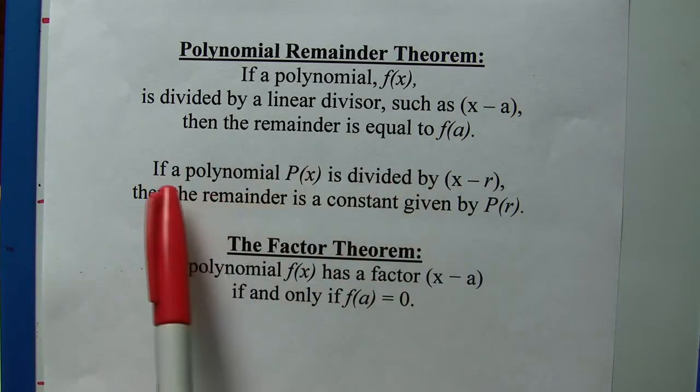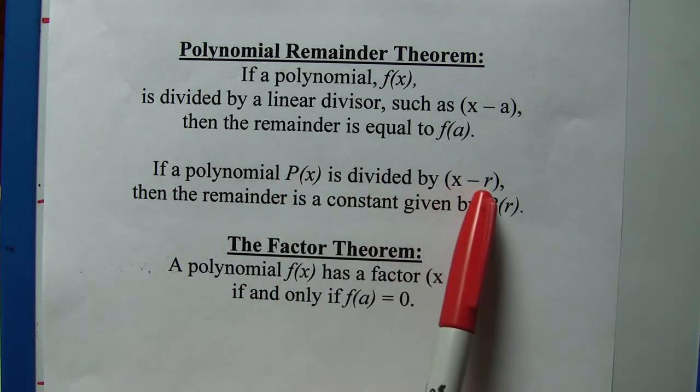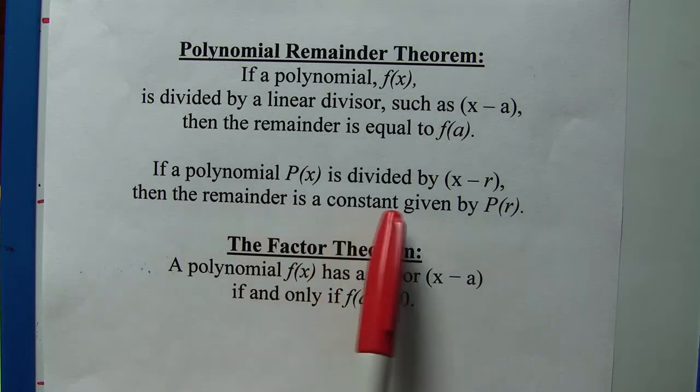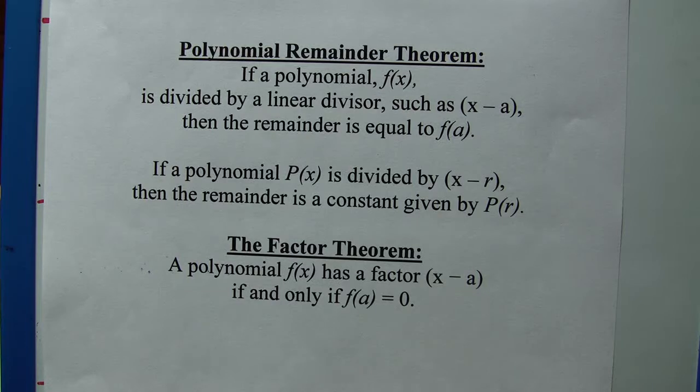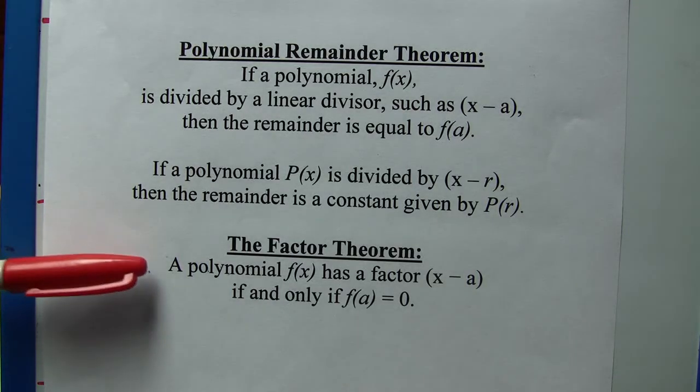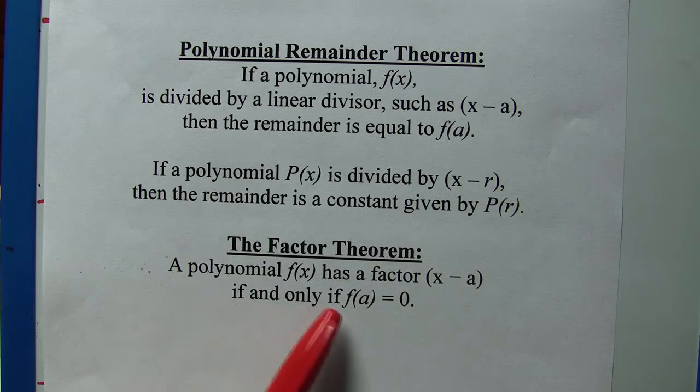Another way of saying this would be if a polynomial P(x) is divided by x - r, then the remainder is a constant given by the function P(r). And then here, the factor theorem: a polynomial f(x) has a factor x - a if and only if f(a) = 0.